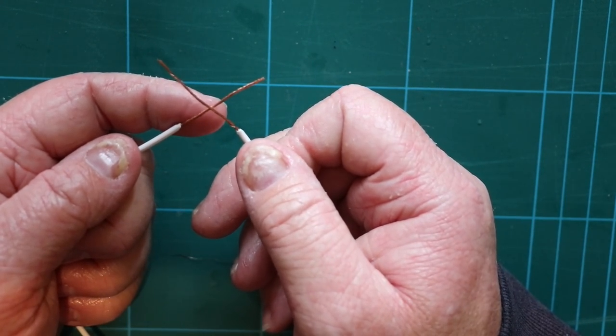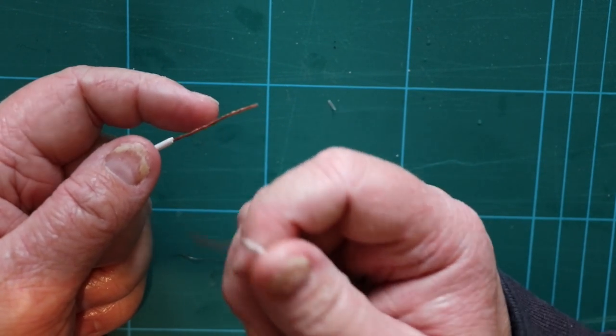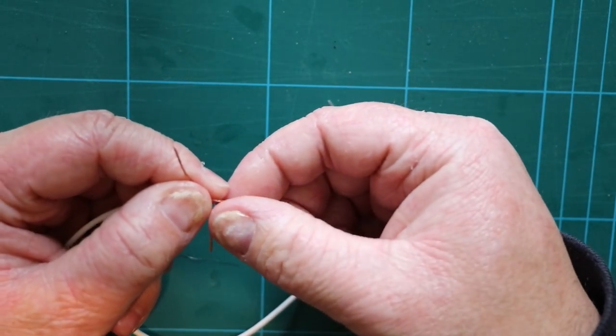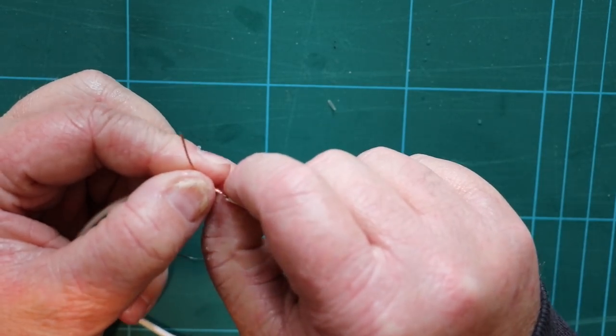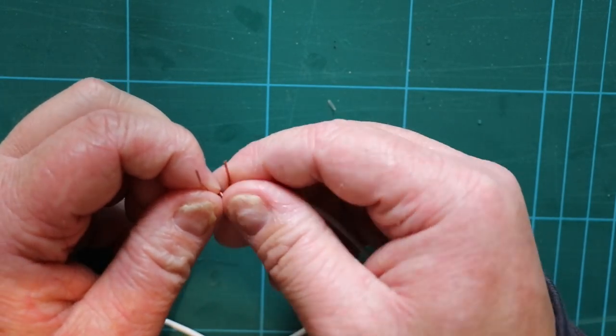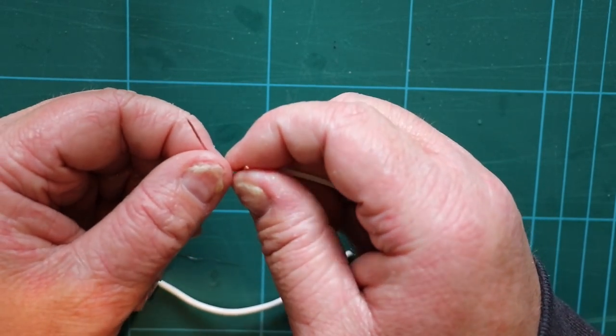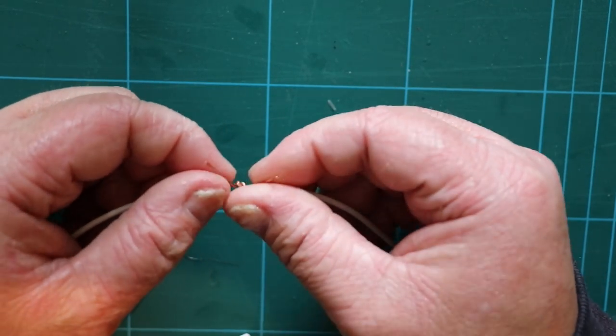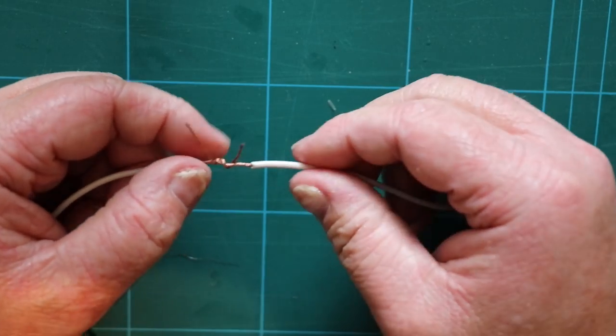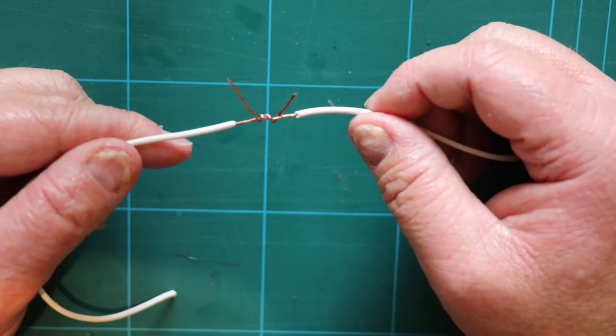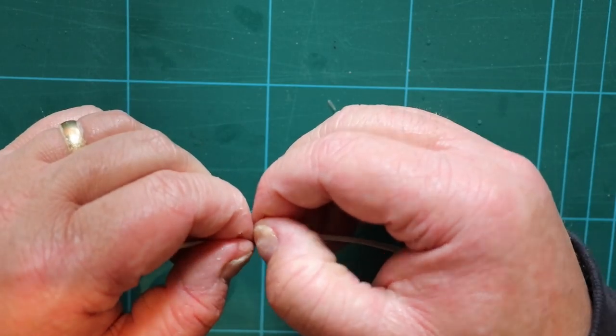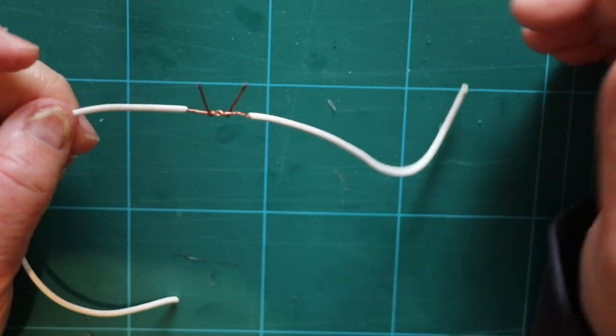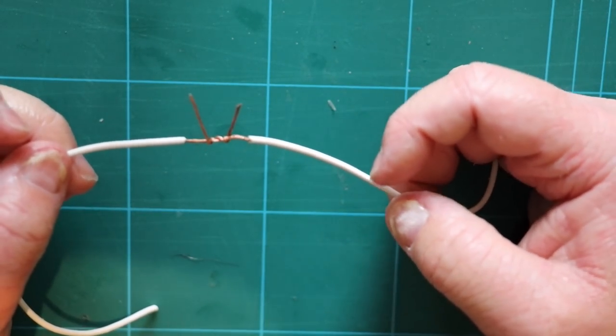So cross them over like so, and with one cable tuck it over the top and out the other side. Okay. Do the same on the other side. Like so. So we've got something that looks like that. I'm just going to tidy that one up a bit better. So now it's not going to fall apart, but it's certainly not tight.